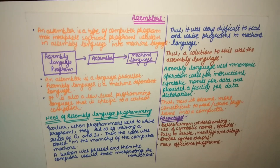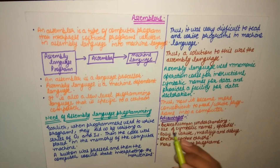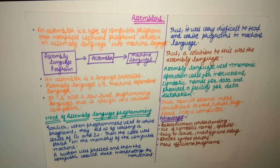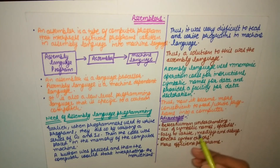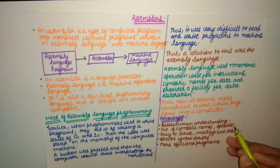Now let's discuss some advantages of assemblers. The first advantage is better human understanding — any programmer who writes code can understand it, and other people reading the source code can also understand it, because it no longer uses zeros and ones. It uses variables and mnemonic opcodes like ADD and SUB, making it much more human-readable.